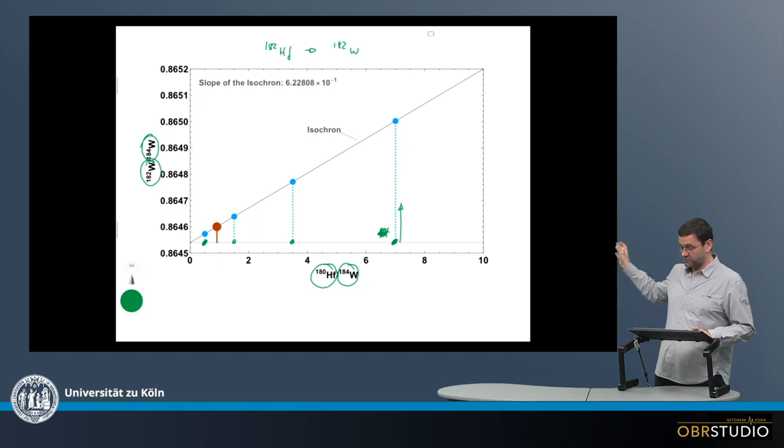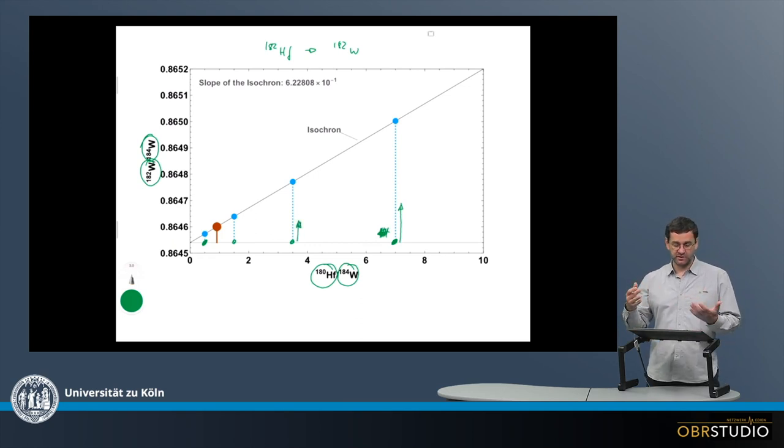So it just moves upwards here. So the same for the second component. So it also moves upwards when the 182 is decaying, that we no longer see in this plot, and so on.